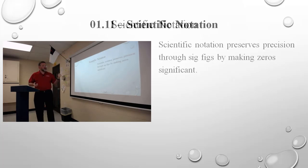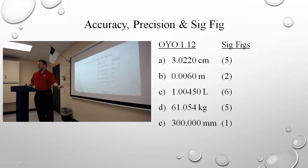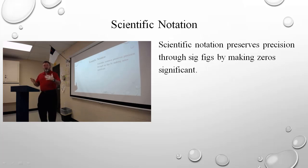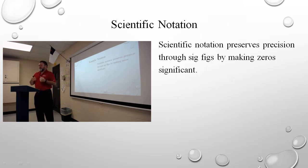When we had three hundred thousand — we said there's only one significant figure in that number. But what if I actually had a device that was more precise and was actually measuring to the thousandths place? How do I communicate that with my number? I don't have a way of doing it with standard notation. However, with scientific notation, I have a way of preserving the significance of trailing zeros that occur before the decimal place.